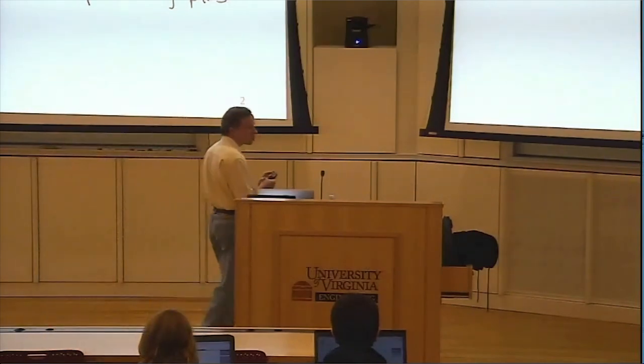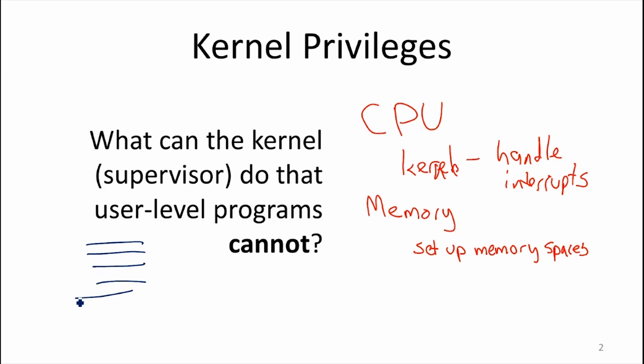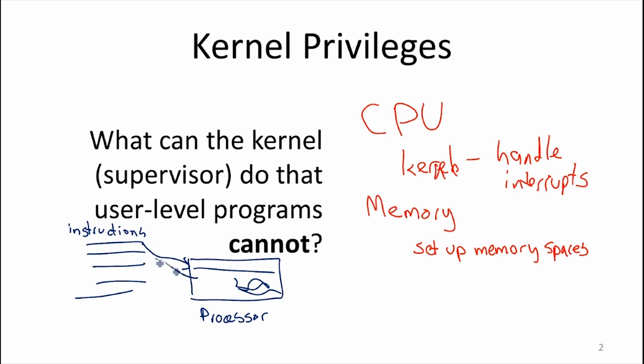If we want the kernel to have privileges that a regular program doesn't have, what do we need in the processor? What happens when a user-level program tries to do something it shouldn't? We saw one example last class: when a user-level program tries to read memory it's not allowed to, the processor will not allow it — it gives a fault instead. That jumps into the kernel to handle it, and eventually we see the user program crash as a result.